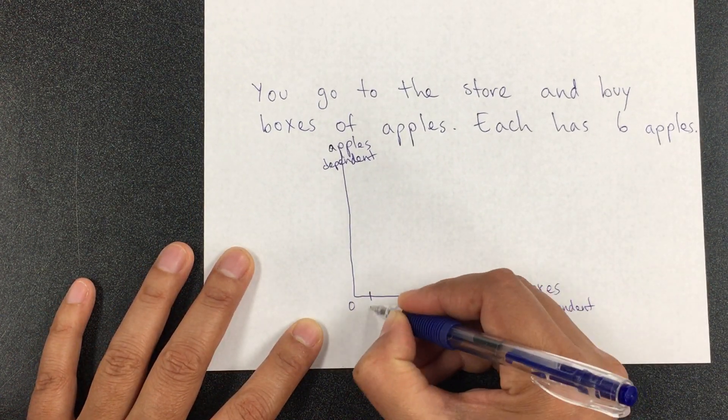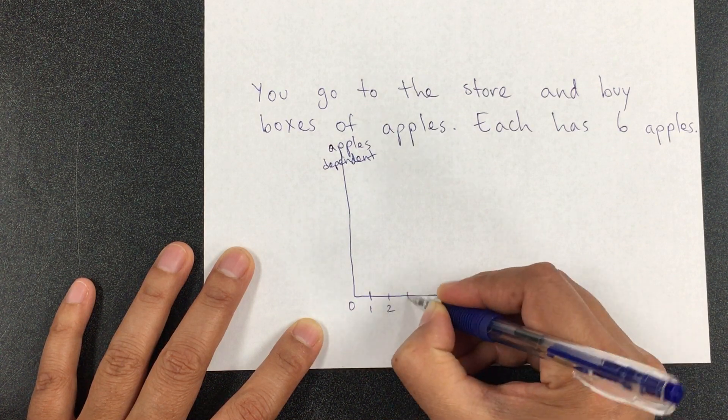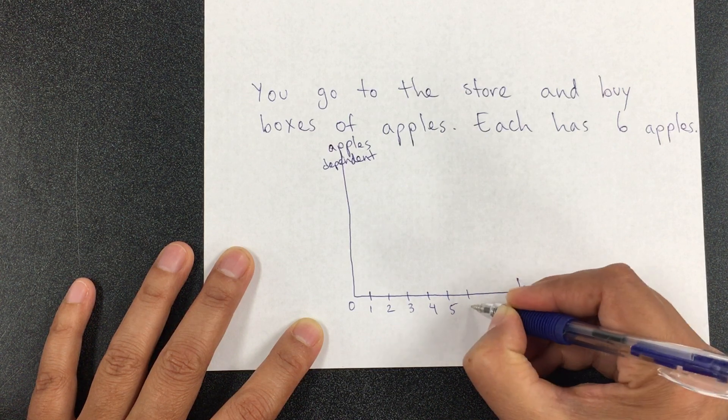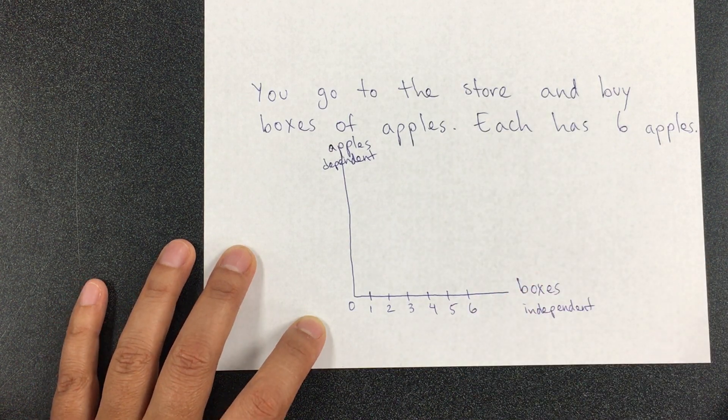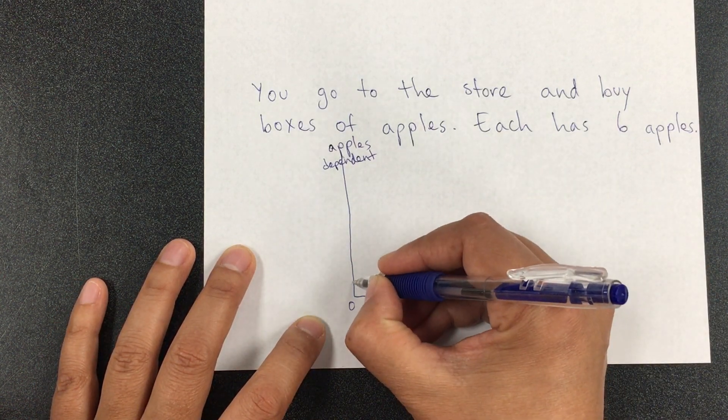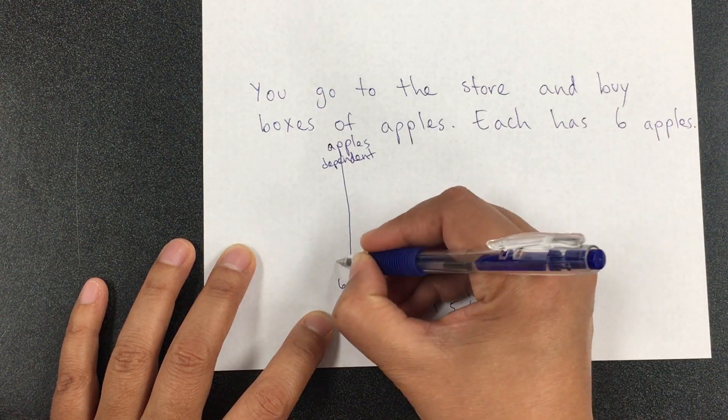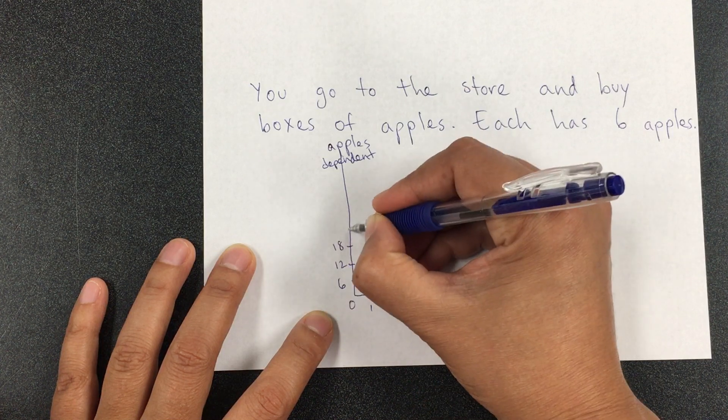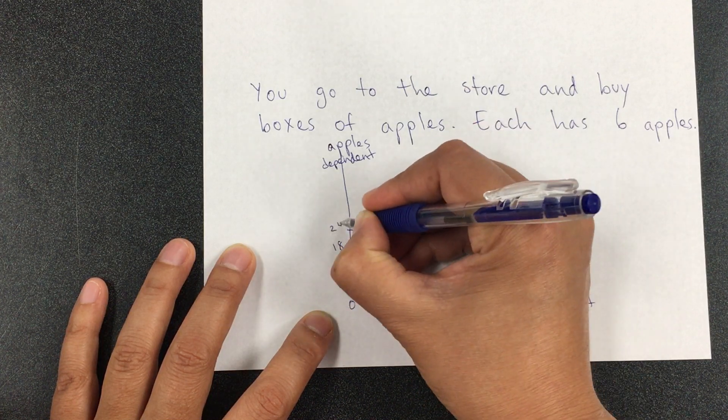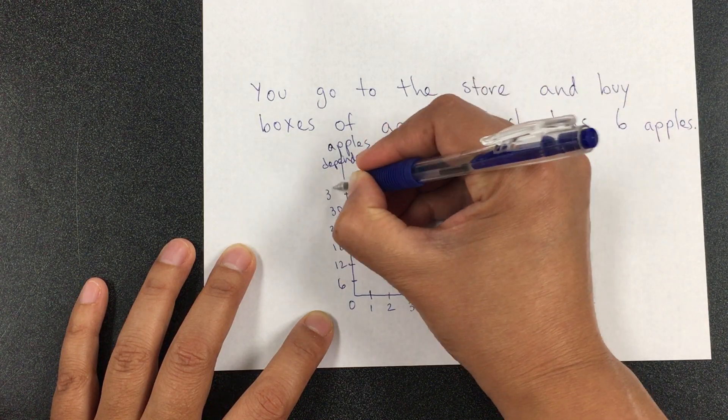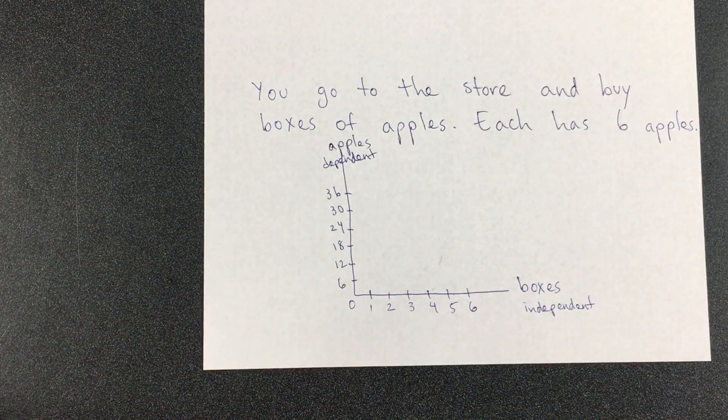I'm going to put zero boxes, one box, two boxes, three boxes, four, five. And on this side, to make our lives easier, six by six: 6, 12, 18, 24, 30, et cetera.